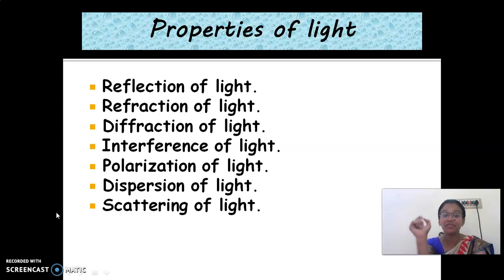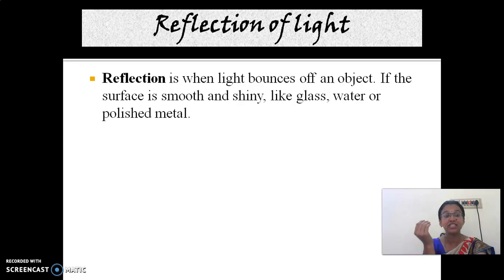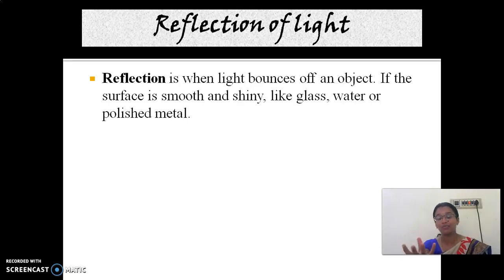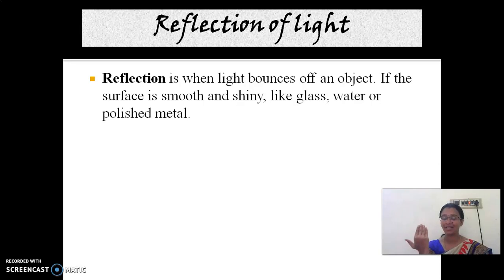First, the heading is reflection of light. So what is meant by reflection? Reflection is when light bounces off an object. If we are having a ball and we throw the ball on a wall, the ball bounces back. This is called reflection.